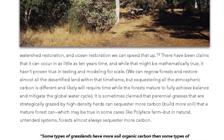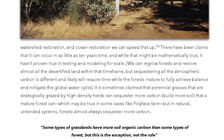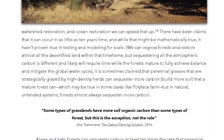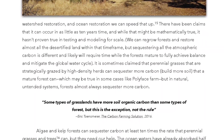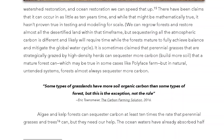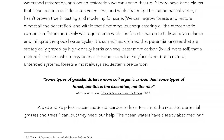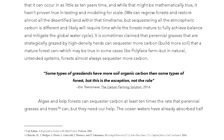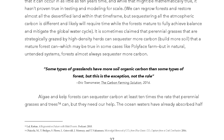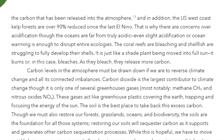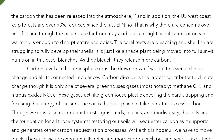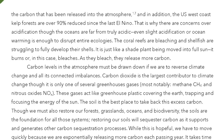It is sometimes claimed that perennial grasses strategically grazed by high-density herds can sequester more carbon and build more soil than a mature forest can. This may be true in some cases like polyphase farming, but in natural untended systems, forests almost always sequester more carbon. Some types of grasslands have more soil organic carbon than some types of forests, but this is the exception, not the rule. — Eric Tonsmeyer, The Carbon Farming Solution, 2016. Algae and kelp forests can sequester carbon at least 10 times the rate that perennial grasses and trees can, but they need our help. The ocean waters have already absorbed half the carbon released into the atmosphere, and the U.S. west coast kelp forests are over 90% reduced since the last El Niño.